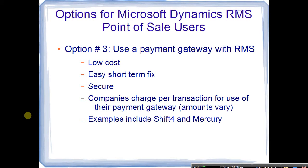Option three: there are payment gateways that work with RMS, allowing you to still meet the chip card requirements. This is a low-cost, good short-term fix that also provides security for processing chip-based transactions. Keep in mind these companies charge per transaction for use of their payment gateway. Even one or two cents per transaction, multiplied by transactions per day and days open, adds up over time. Examples of these payment gateways include Shift4 and Mercury.